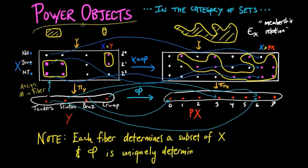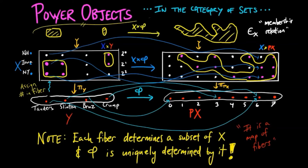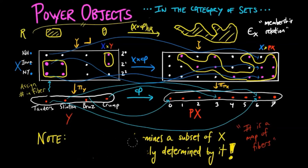This is the same as saying that the membership relation is a terminal such structure, i.e. each subset of the product of X and Y uniquely determines a morphism phi such that the morphisms X cross phi and its restriction to the subset makes the two squares above commute.